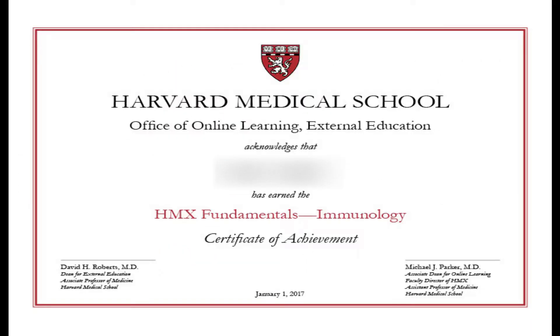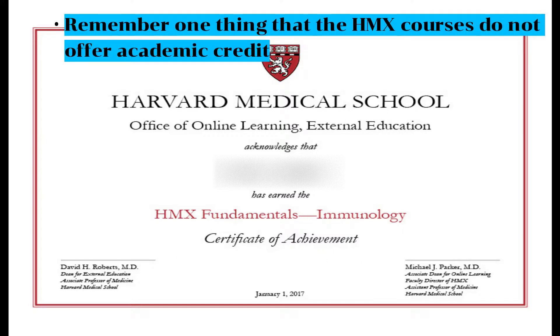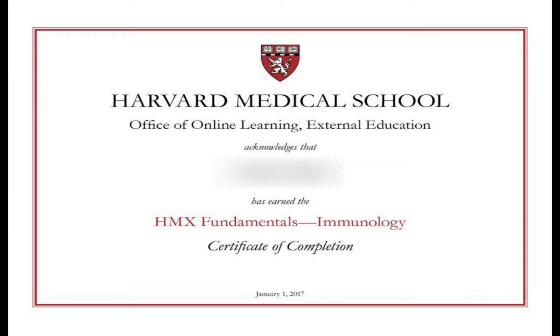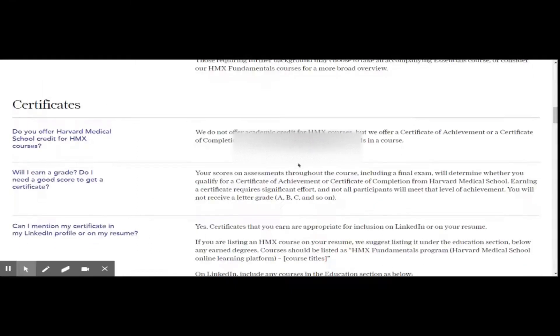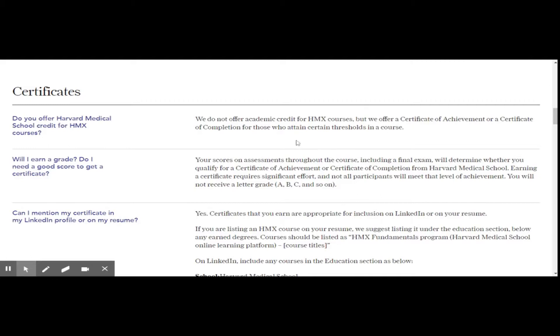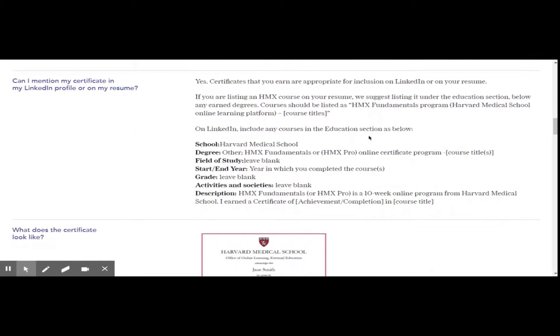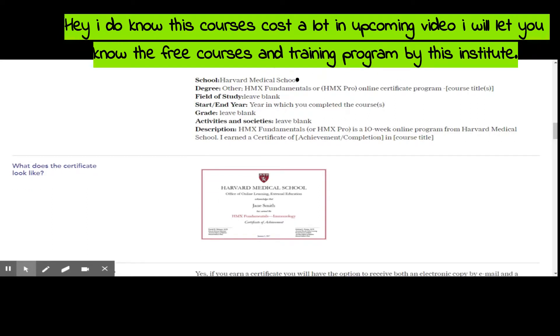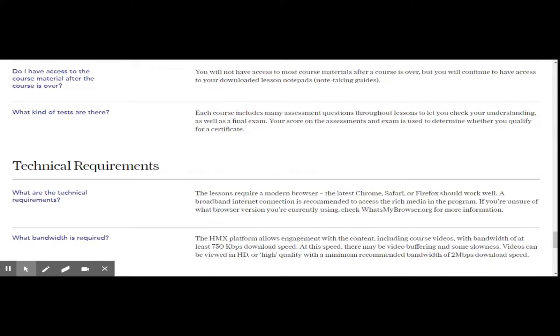Remember that the courses are designed to be rigorous, especially the final exam. Currently HMX offers two kinds of certificates: first, the Certificate of Achievement for students with at least 80% overall and 65% in the final exam; and second, the Certificate of Completion for those students who have achieved 65% overall and 65% in the final examination. You can add this learning experience and certificate to your LinkedIn education section in a specific format.